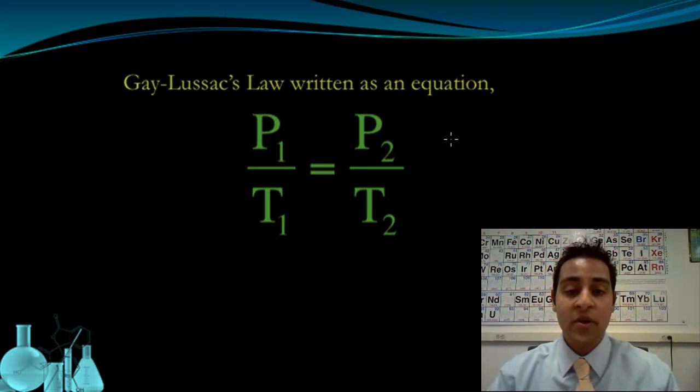Here we have it written as an equation: P1 over T1 equals P2 over T2. The initial pressure and temperature in a ratio should be the same as the final pressure and temperature ratio. We can use this to predict changes in either pressure or temperature, assuming that volume and the amount of gas is held constant. This has to be true to use this equation.